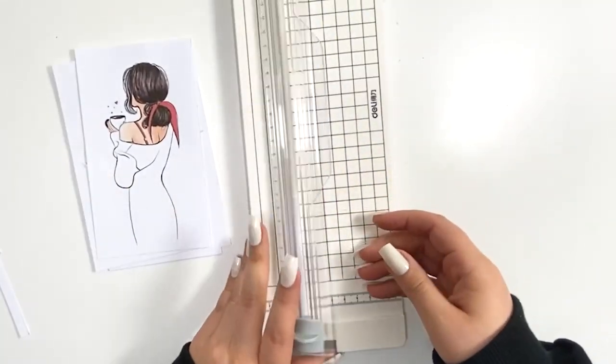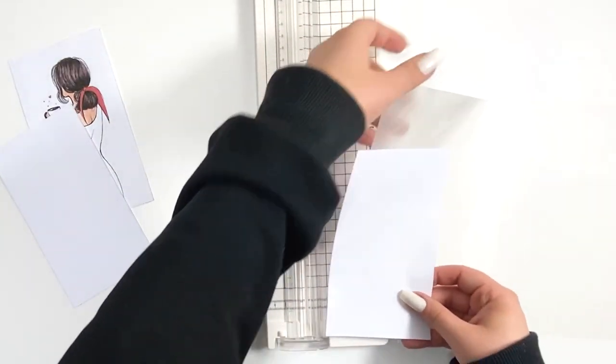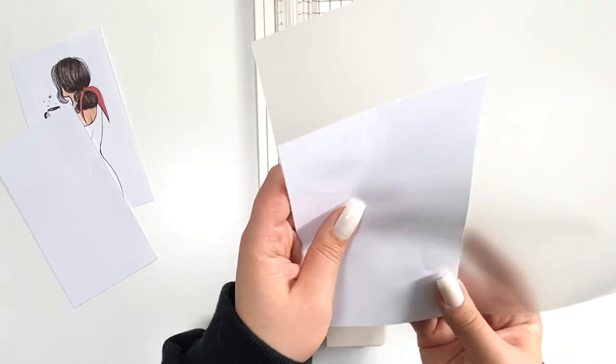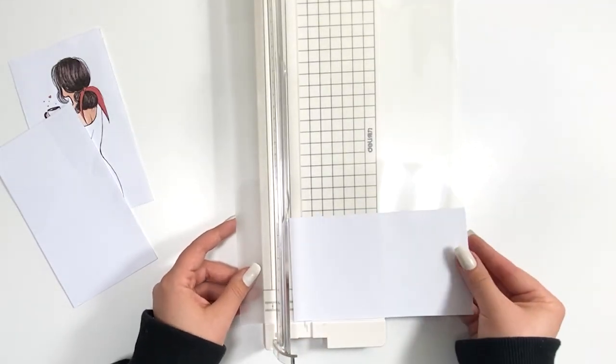So I cut five of these papers and also the dashboard has the same size. After that I cut the same size of laminating sheets.